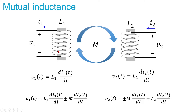Now if you have multiple inductors, the flux that passes through the first inductor can also pass through the other inductors, so there will be a certain amount of mutual inductance between them. The voltage of the first or second winding depends not only on their own current and inductance, but also on the mutual inductance and the current of the other coil. So V1 = L1·di1/dt ± M·di2/dt, and the same for the second coil.